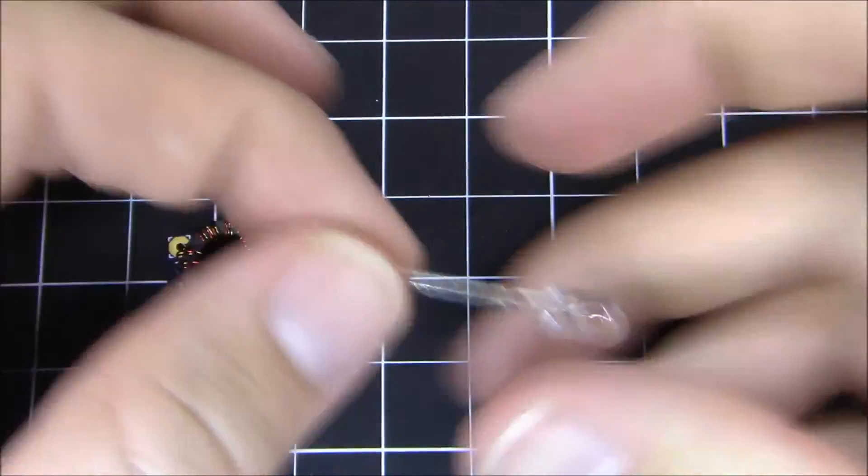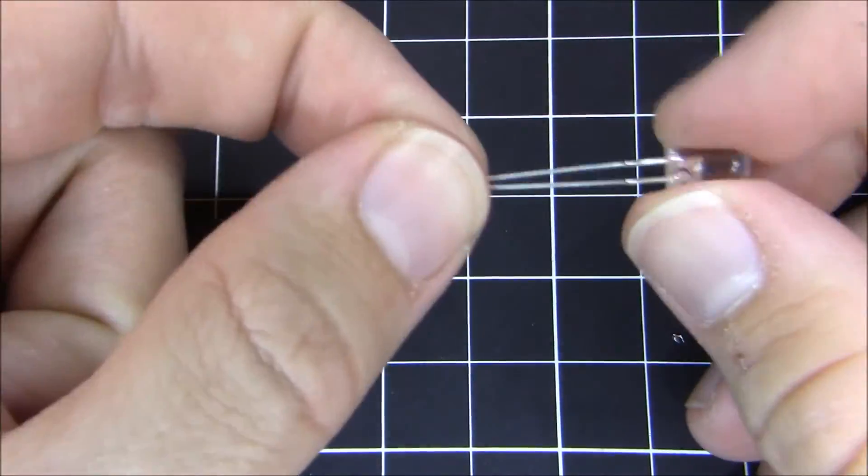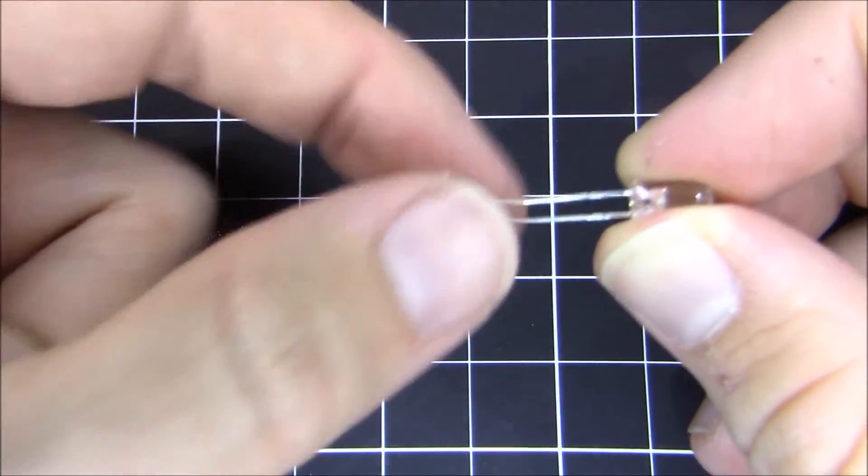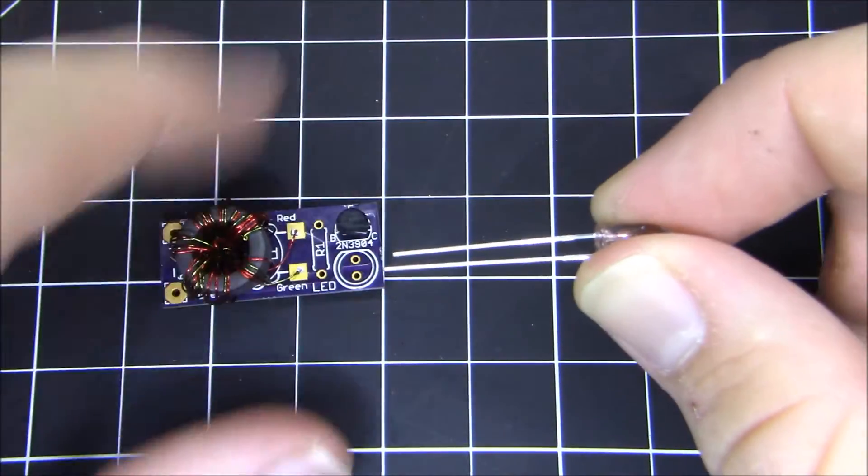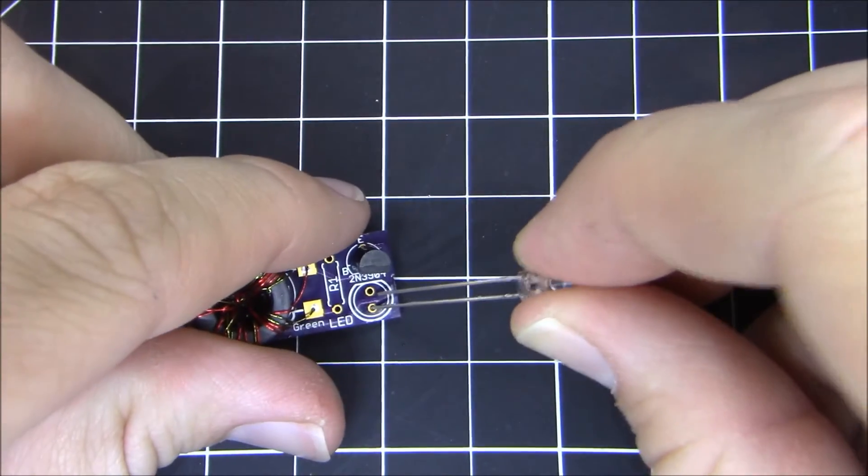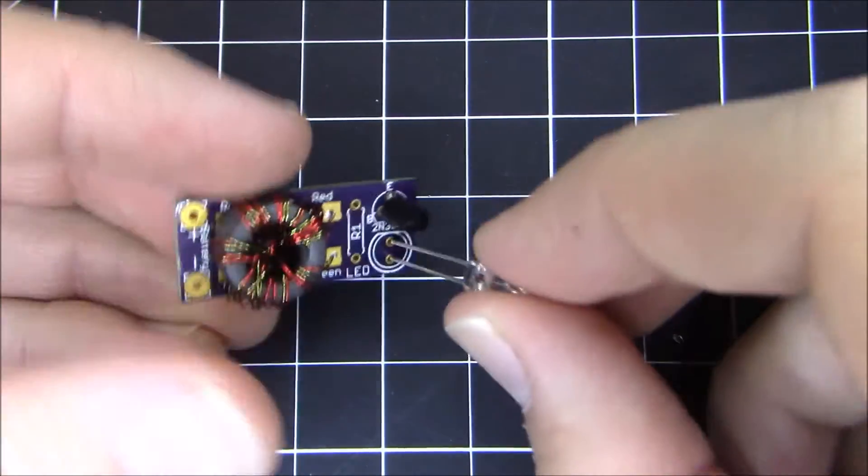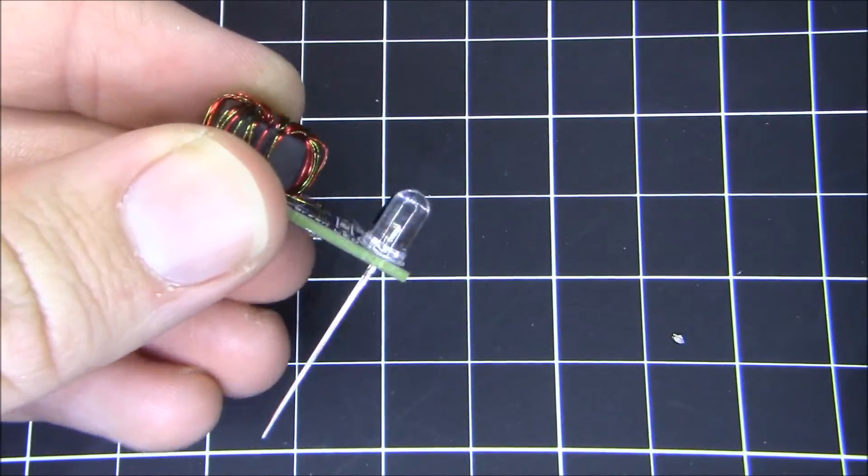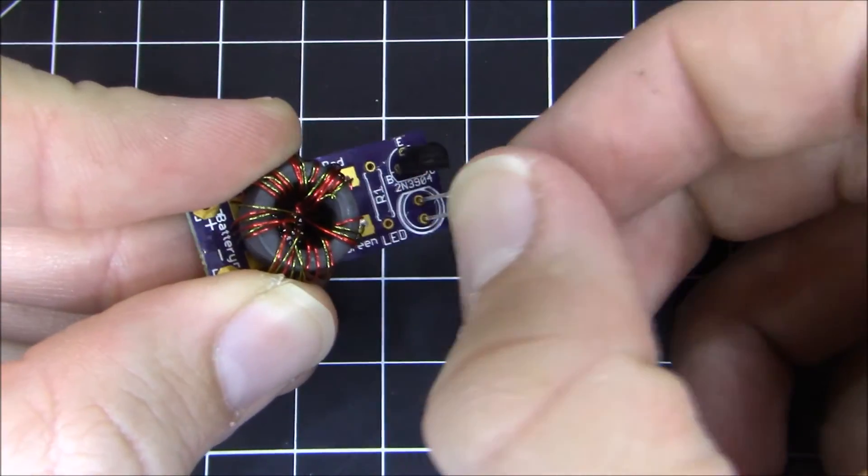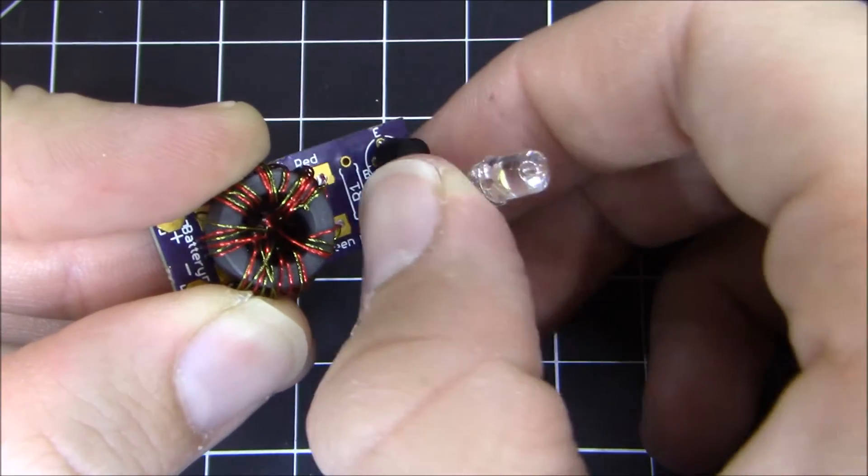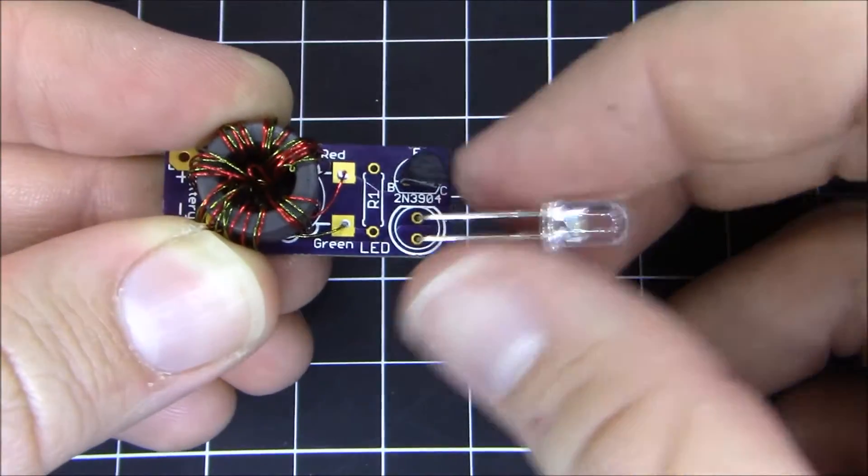And now we're moving on to the LED. The LED has a long lead and a short lead. Short lead corresponds to the flat side of the LED. So the short lead corresponds to the flat side of the stencil on the PCB. So what you can do is push the LED all the way through like this. But I recommend kind of leaving it out like this so that you can point it at whatever you'd like later on.